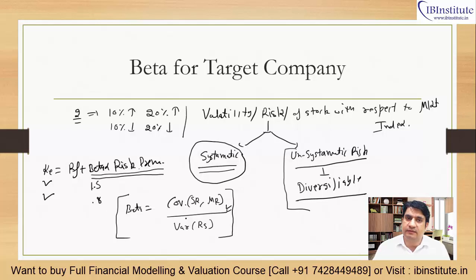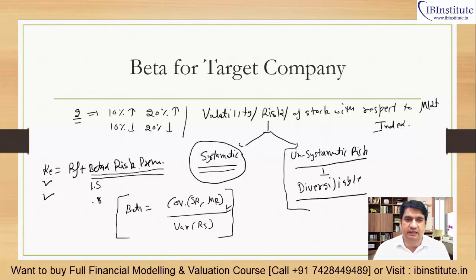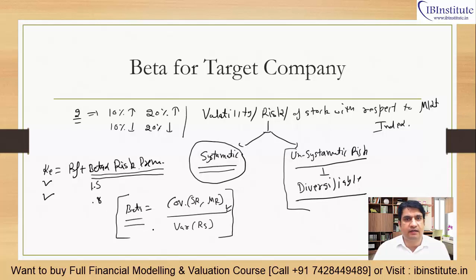So the website which provides the data — at the back end, the calculation is already done. The software-based calculation where covariance and variance is already computed means you don't have to calculate the beta yourself. The beta which we need can be sourced directly.